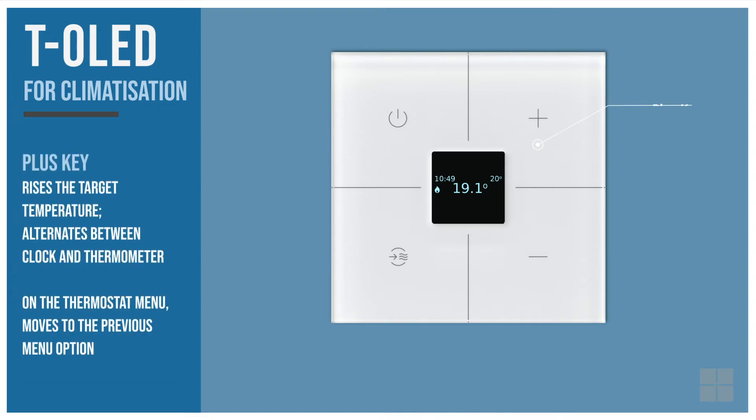The plus key raises the target temperature if the thermostat is on, and alternates between the clock and thermometer shown on the display when the thermostat is off. On the thermostat menu, the plus key moves to the previous menu option.